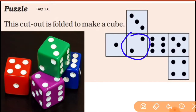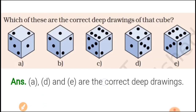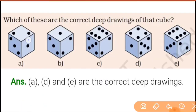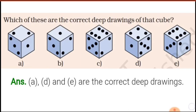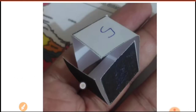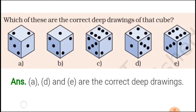From the cut-out you can get that one and three are adjacent. This means drawing A is the right presentation — it is a correct deep drawing.